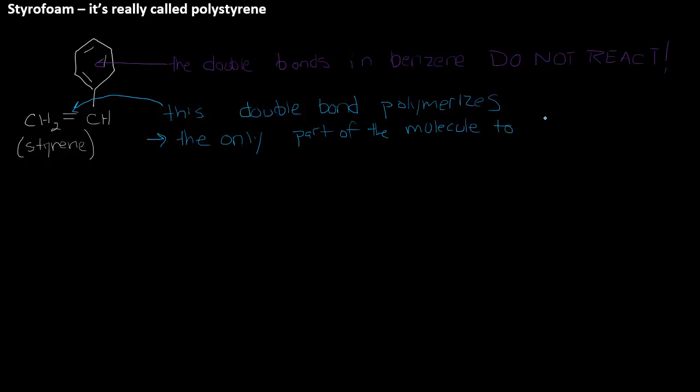When, if asked to deduce the structure of polystyrene, we're essentially going to repeat the structure of styrene. Benzene, intact benzene ring and all, the only thing that will change is the double bond.